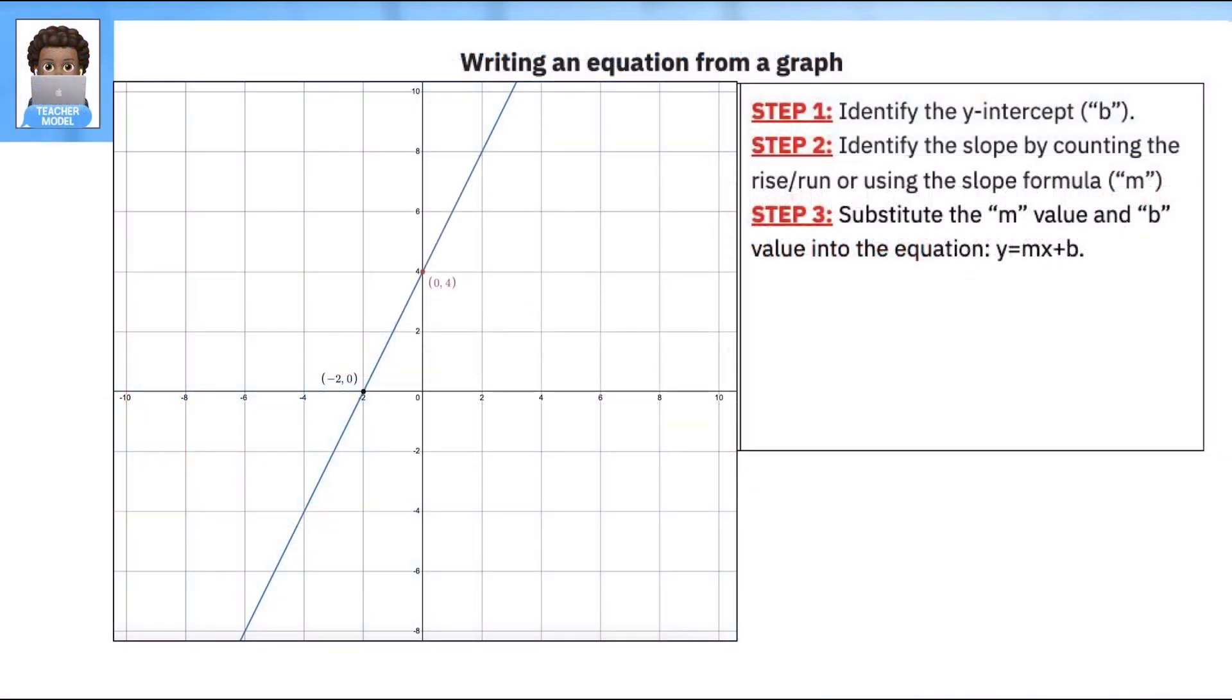Here's our first example: writing an equation from a graph. We're going to write an equation in y equals mx plus b form. First step, I'm going to look for our intercept, so I'm going to look at our y-axis and find a point where the line intercepts, and we see it right here at point zero four. So that means we have the very first part of our form of our equation: we have b is equal to four.